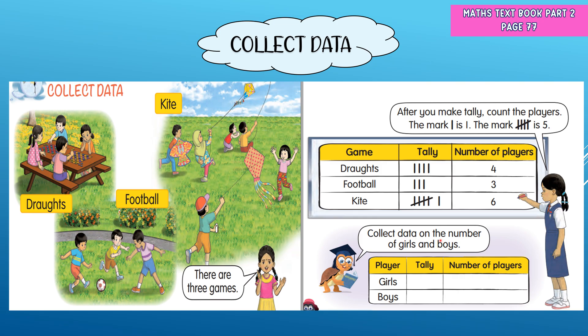Now collect data on the number of girls and boys. Look at how many girls and boys are playing each game. For girls: make a tally first. For draughts, there are two girls. No girl plays football. For kite, there are two girls. So the total number of girl players is four.